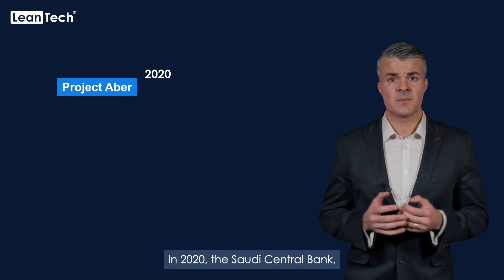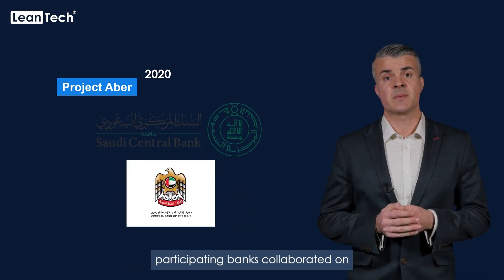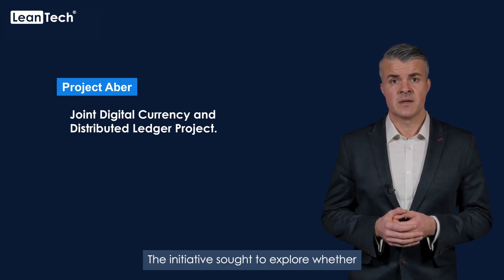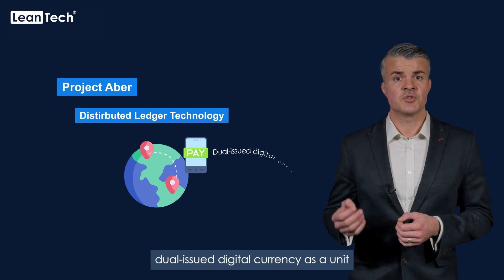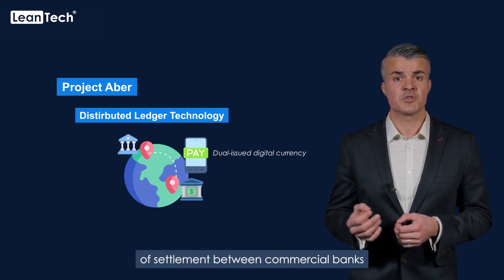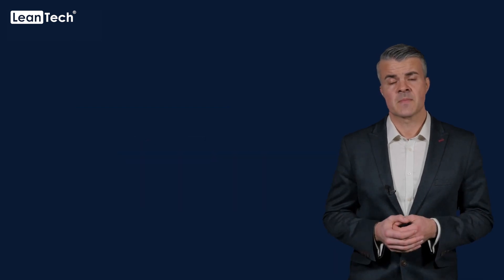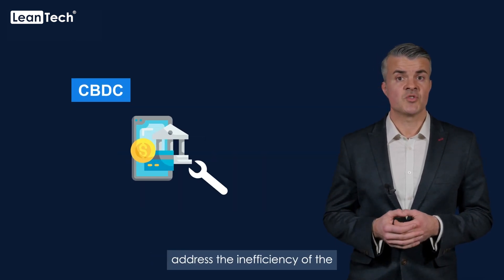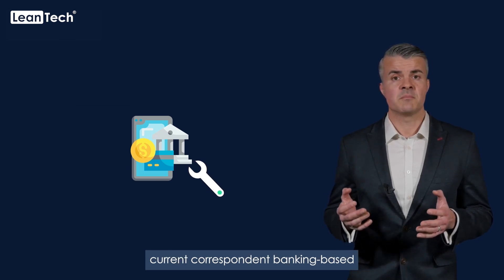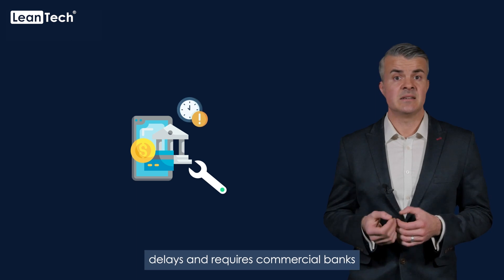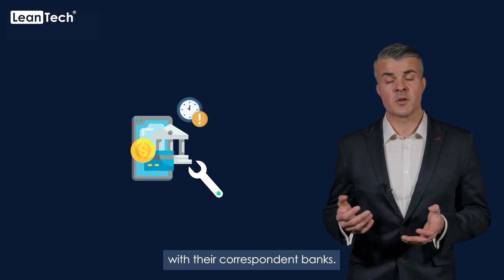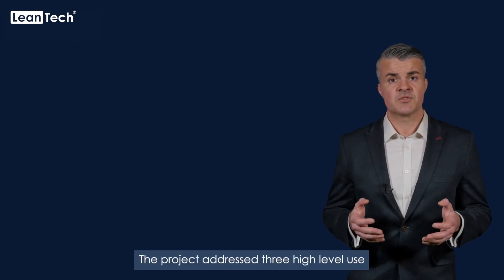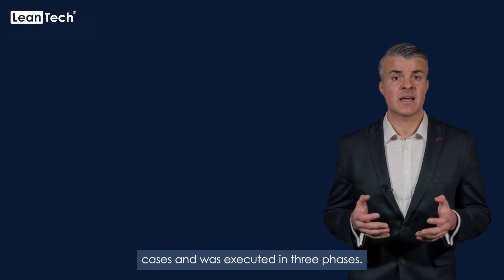In 2020, the Saudi Central Bank, Central Bank of the UAE and six participating banks collaborated on Project ABBA, a joint digital currency and distributed ledger project. The initiative sought to explore whether DLT could enable cross-border payments between the two countries using a dual-issue digital currency as a unit of settlement between commercial banks domestically and across borders. The aim was to see if a CBDC could address the inefficiency of current correspondent banking-based systems, which results in delays and requires commercial banks to maintain substantial Nostro accounts with their correspondent banks.